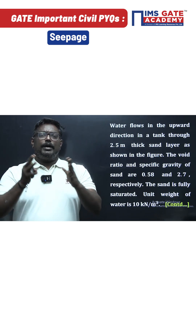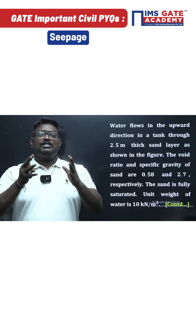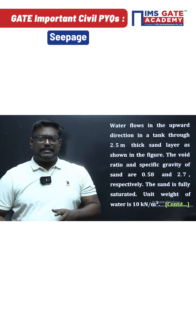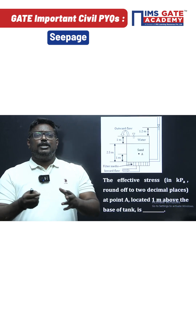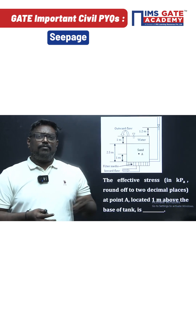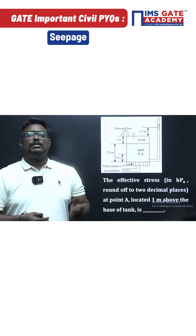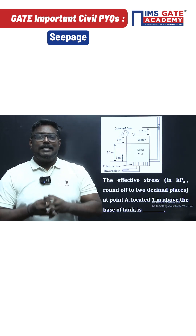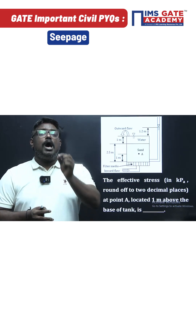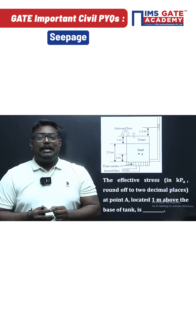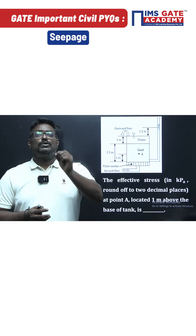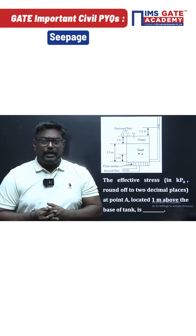Now, void ratio and specific gravity are given. In addition to this, the flow is upwards. The question is asking how to calculate the effective stress at a point.